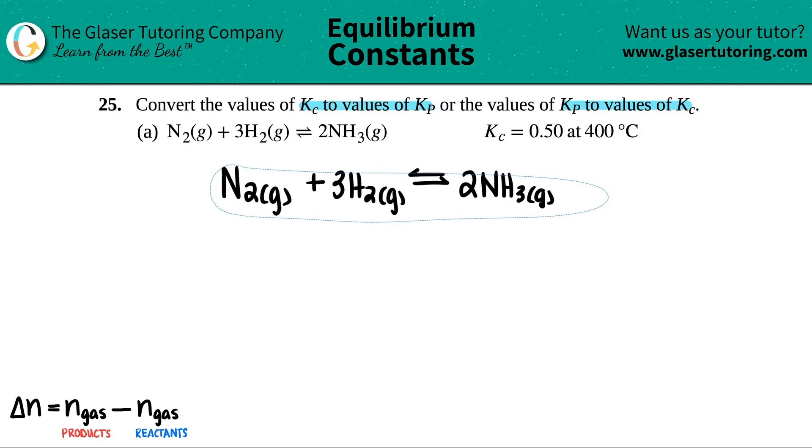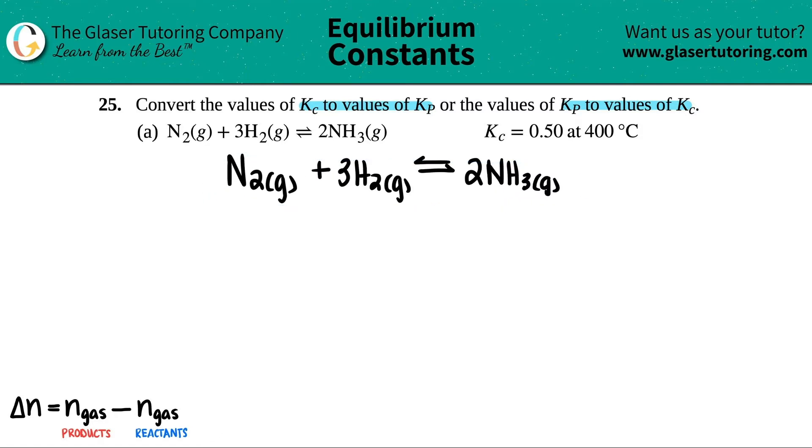This is a pretty specific question - seems like we just want to convert one equilibrium constant to another. Since they gave us the Kc value, I would be working over here. We just have to convert from the Kc into the Kp.